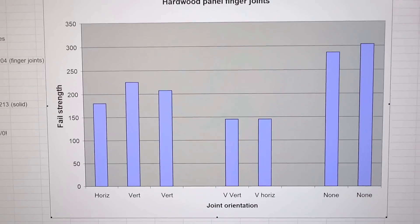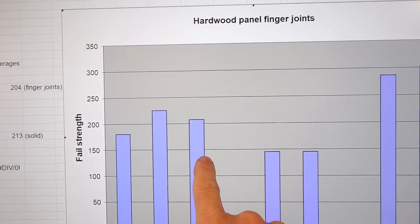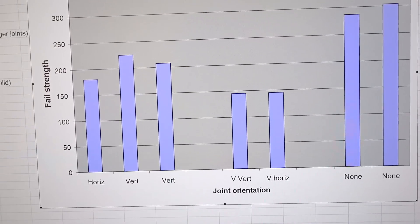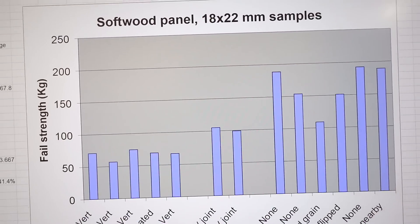And for the hardwood panel, my V joints did considerably less well than the finger joints, half as strong as the original, which is kind of in line with the other materials. I tended to be about half of the solid wood strength.